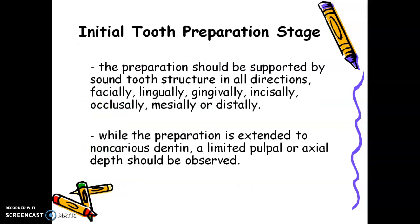For the initial tooth preparation stage, the preparation should be supported by sound tooth structure in all directions. That means your enamel should still be supported by sound, healthy dentine. The enamel should always be supported by sound dentine. While the preparation is extended to the non-carious dentine, a limited pulpal or axial depth should be preserved.